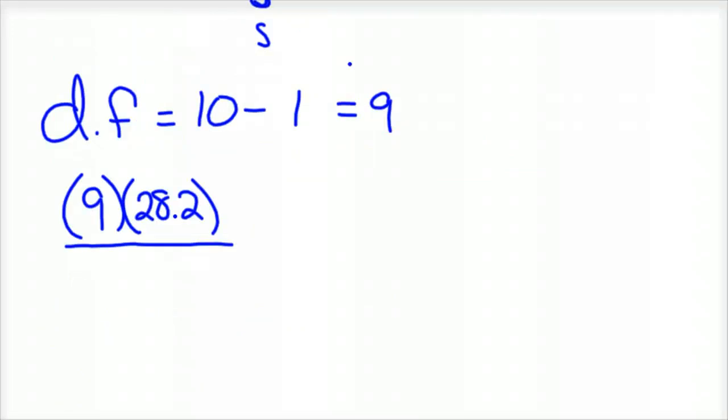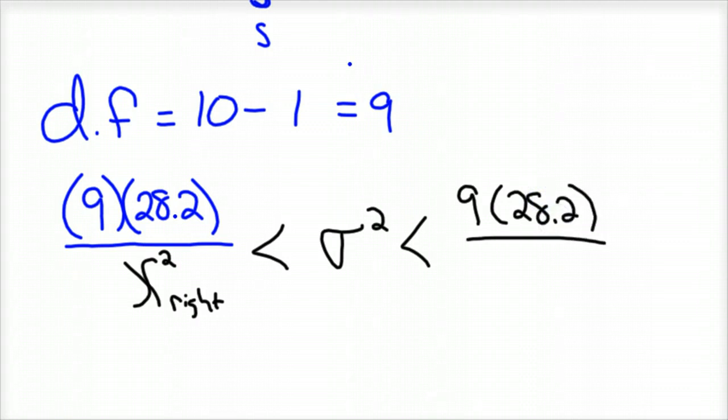And then less than, we'll just come back to it. Sigma-squared, yep, our population variance. So we want to know the variance of our entire population. And then it would be the same. Degrees of freedom times your 28.2 all over chi-squared for the left side.